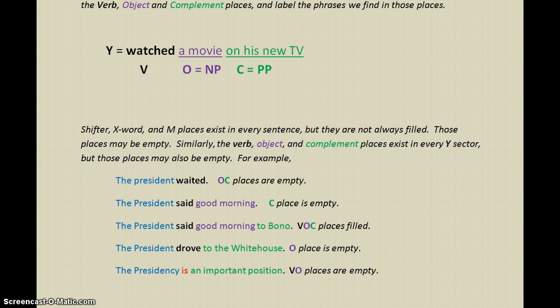For example: 'The president waited.' Waited is the Y; waited is the verb; the object and complement places are empty. 'The president said good morning.' The president is the subject; X and M places are empty; the Y is said good morning — said is the verb; good morning is the object; but the complement place is empty. 'The president said good morning to Bono.' Said is the verb; good morning is the object; and to Bono is the complement. Now all three places are filled in Y.